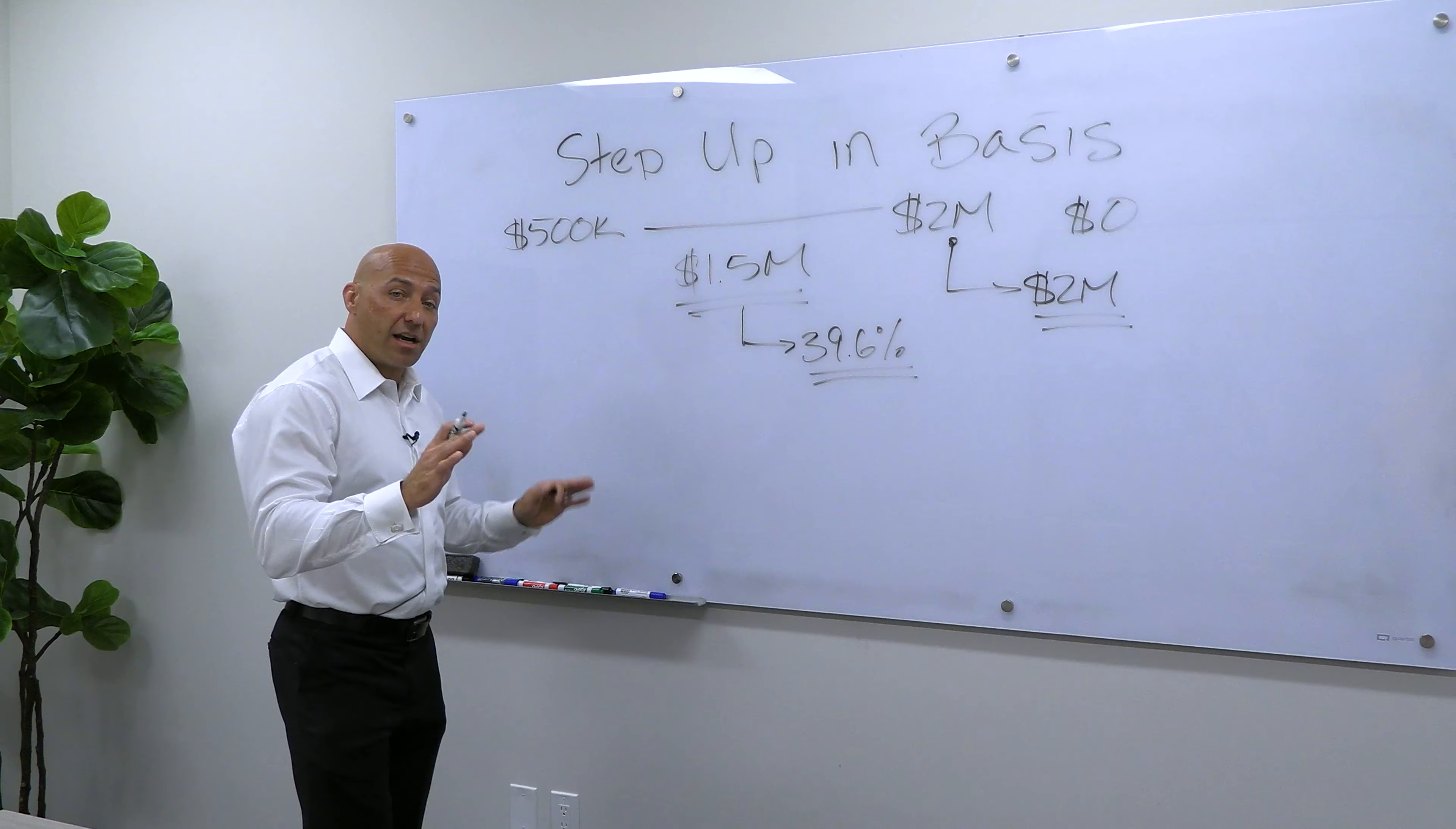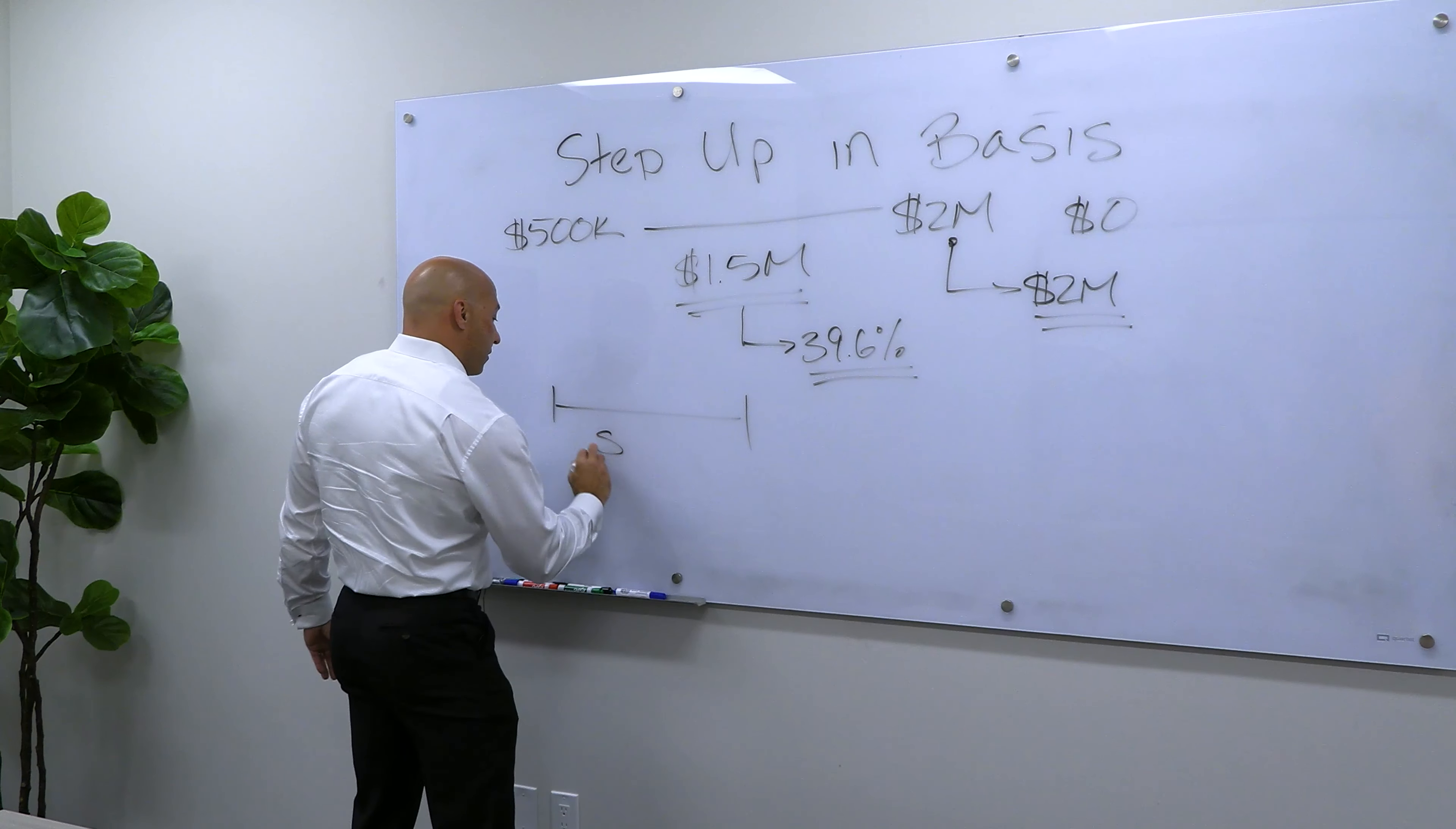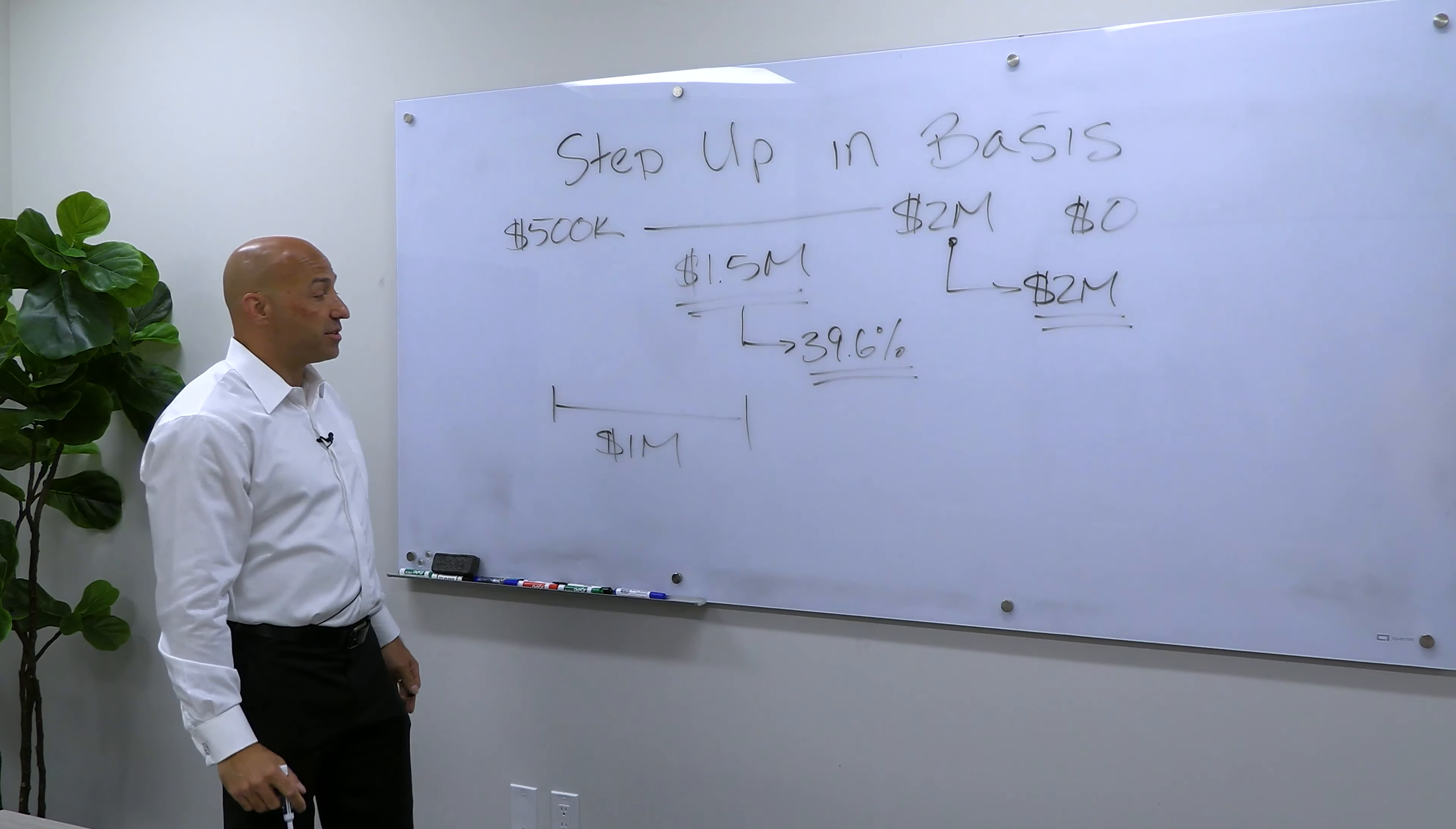However, he's kind of backtracked a little bit. And what he's proposing now is that they put a million dollar cap on the gain. So you'd get a step up of $1 million, but that would be the maximum step up.